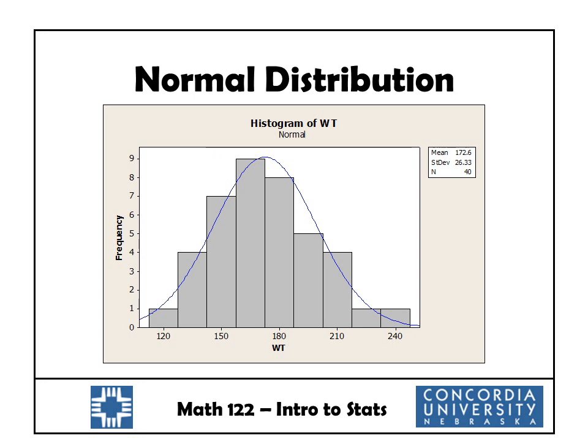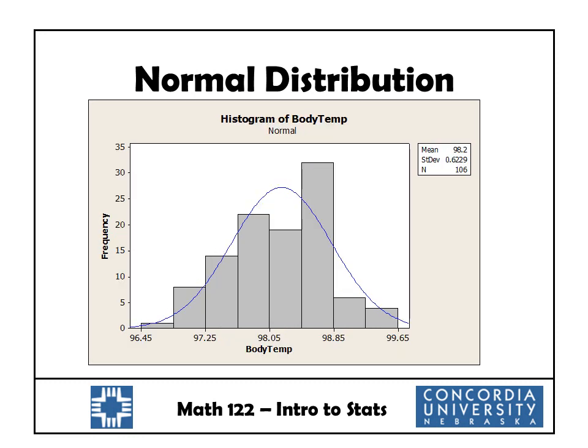One thing we like to do with a normal distribution is draw a smooth curve over the bars. That smooth curve starts at a low, increases to a max, and decreases to a low again — this is what's called the bell curve, and we'll talk more about it later in the semester. Looking at our histogram of body temperatures with a bell curve drawn over the tops of the bars, we can see that the bell curve does fit the general pattern, though not quite as perfectly as in the previous example. For this reason, we would say that our body temperature data is normally distributed.